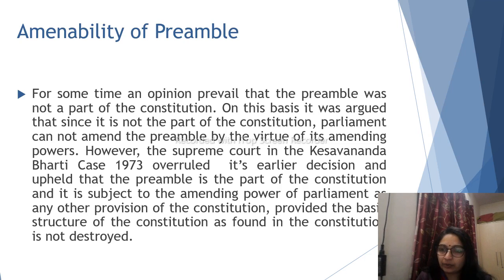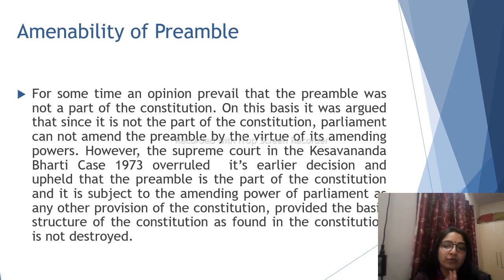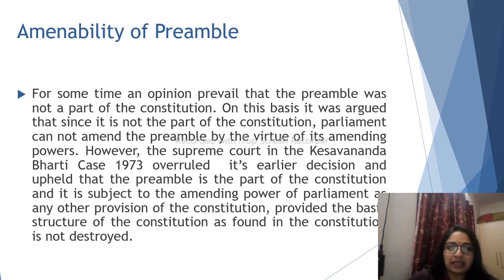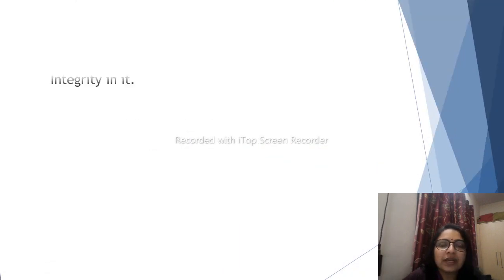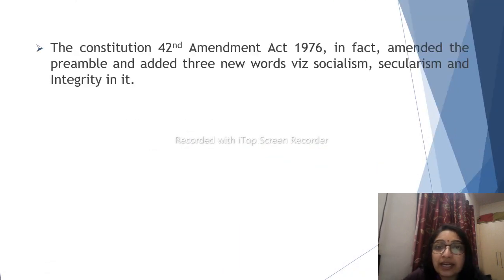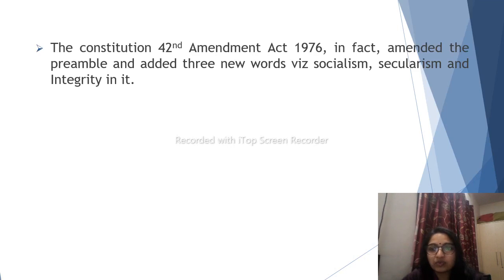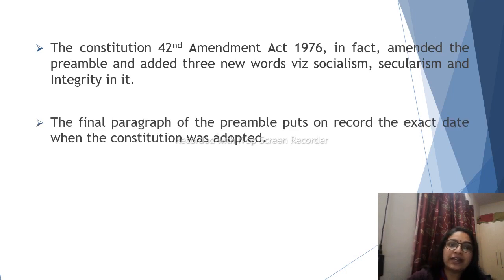The Constitution's 42nd Amendment Act 1976 amended the Preamble and added three new words: Socialism, Secularism, and Integrity. These words were not originally in the Preamble of the constitution. They were added through the 42nd Amendment Act of 1976.